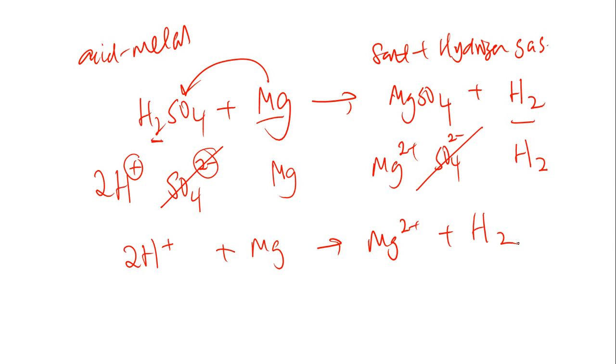Something which I didn't do in the earlier equation is to write in the state symbols. Because this is an ionic equation, you must include the state symbols. H plus is from H2SO4 - H2SO4 is in the aqueous state. Magnesium is a metal, solid state. Magnesium sulfate is an ionic compound in aqueous state, and hydrogen is a gas. So this is the ionic equation for an acid metal reaction.